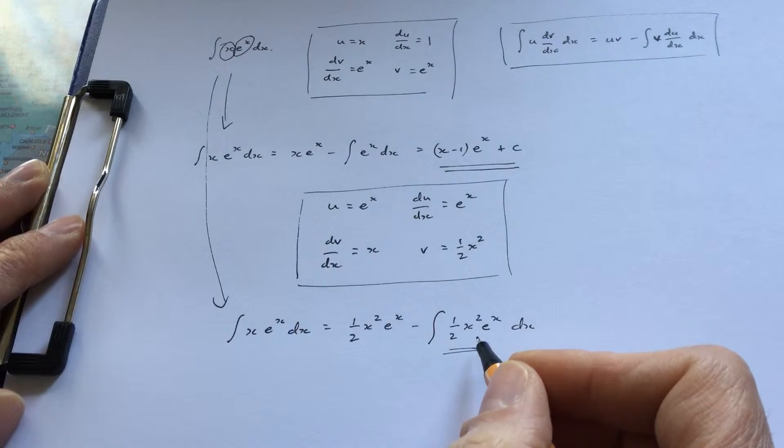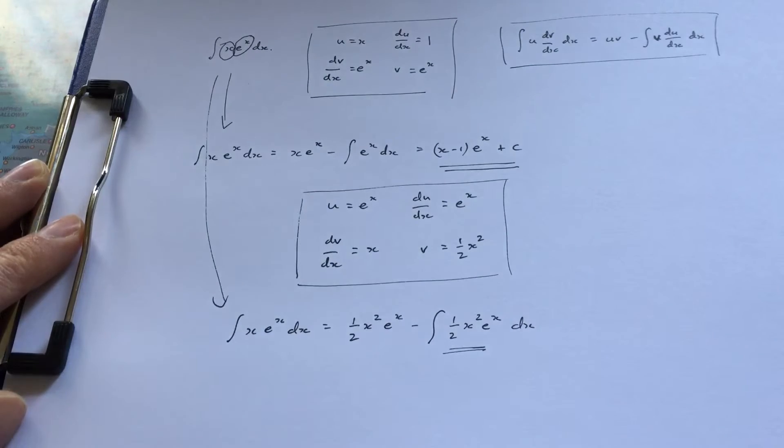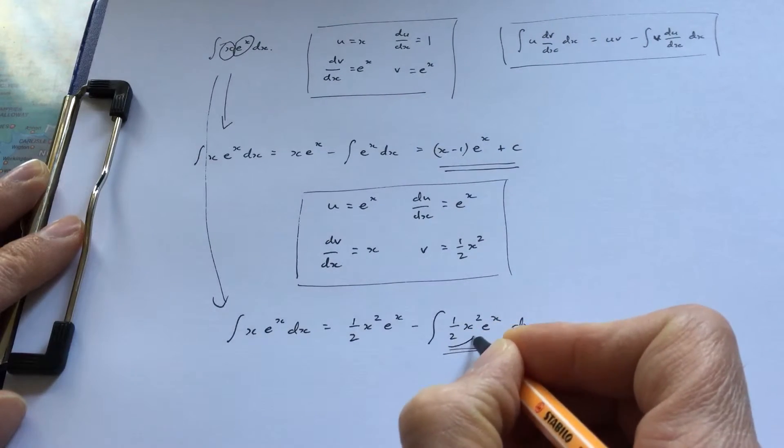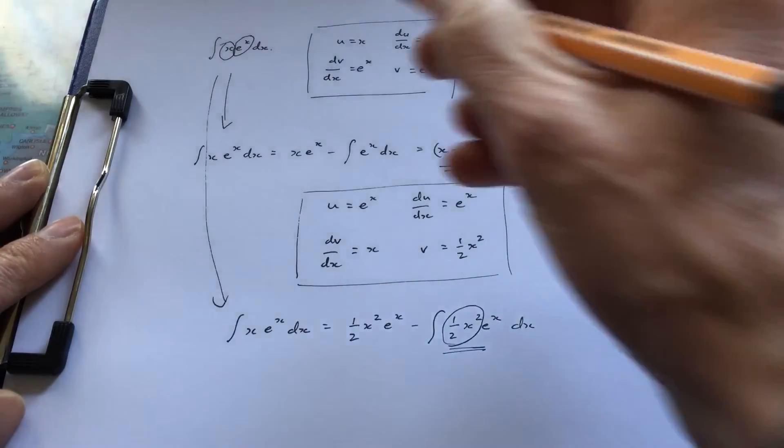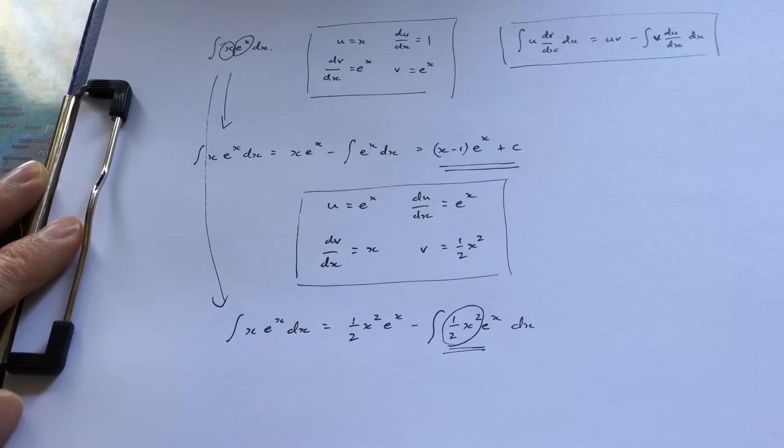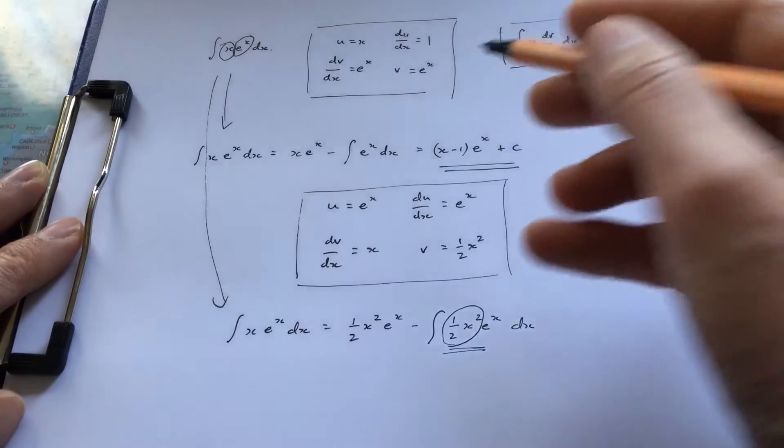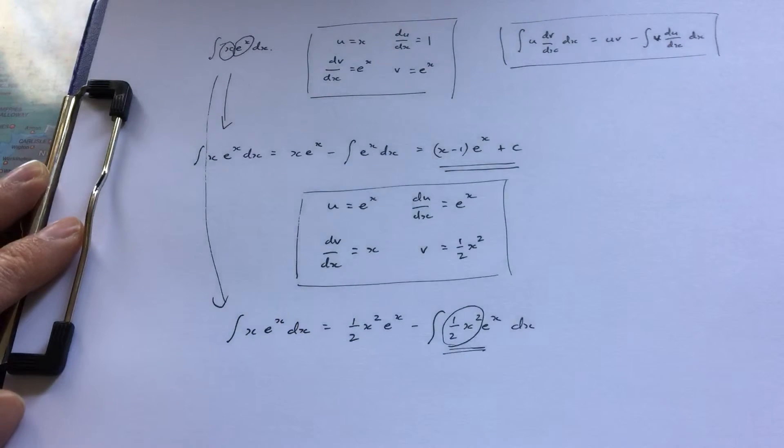I could integrate it using integration by parts again, taking u = ½x² so it becomes simpler. But it's a much longer process than doing it right from the start. There are rules for deciding what to take as u and dv/dx.